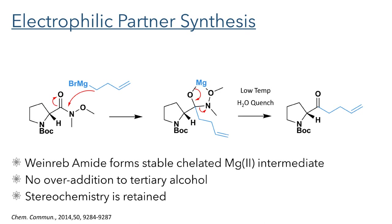The synthesis of the electrophilic partner begins with the Grignard addition of homoallyl magnesium bromide to the Boc-protected proline Weinreb amide. A common problem that arises with Grignard reactions of acids and amides is over-addition to form a tertiary alcohol. Weinreb amides overcome this issue by forming a five-membered magnesium chelated ring after the addition of one equivalent of Grignard reagent. This chelate is stable at low temperatures and prevents another equivalent of the Grignard from adding. Quenching this reaction at low temperature allows the target ketone to be formed without over-addition. Notably, the chiral centre did not undergo racemisation during the reaction, something which could have occurred due to the acidic alpha proton of the proline ring and the highly basic Grignard reagent.